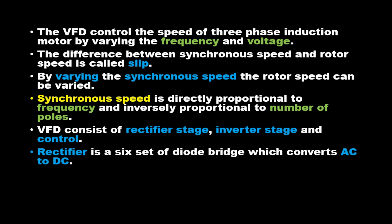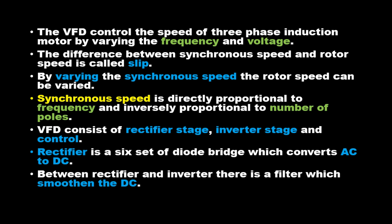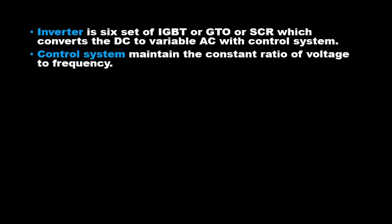Rectifier is a 6-set of diode bridge which converts AC to DC. Between rectifier and inverter there is a filter which smoothens the DC. Inverter is 6-set of IGBT or GTO or SCR which converts the DC to variable AC with control system. Control system maintains the constant ratio of voltage to frequency.